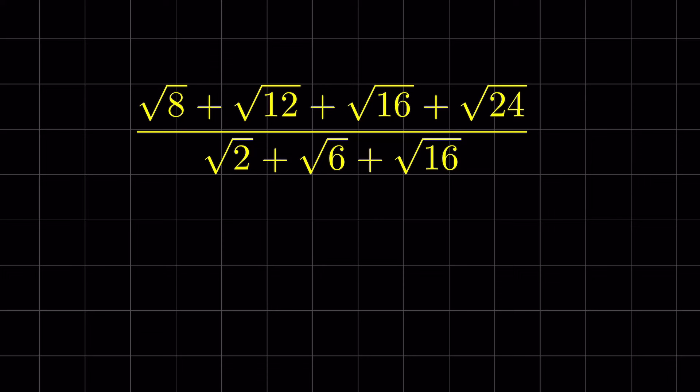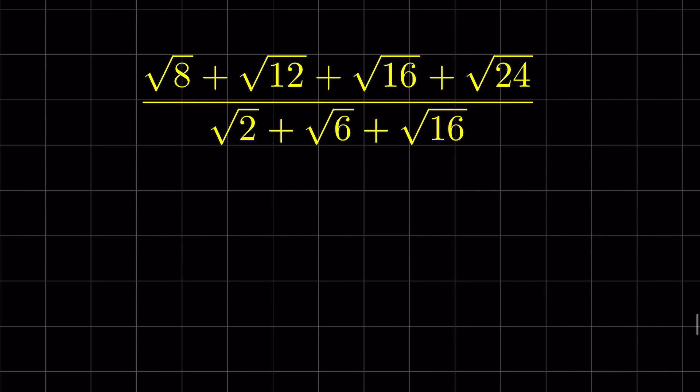Square root of 8 plus square root of 12 plus square root of 16 plus square root of 24, upon square root of 2 plus square root of 6 plus square root of 16. How to simplify this?